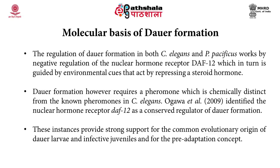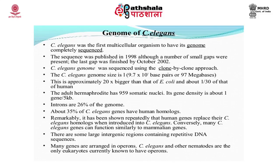The regulation of dauer formation includes negative regulation of the nuclear hormone receptor DAF-12, which in turn is guided by environmental cues that act by repressing a steroid hormone. C. elegans was the first multicellular organism to have its genome completely sequenced. The sequence was published in the year 1998 although a number of gaps were present. The last gap was finished by October 2002. The genome was sequenced using the clone by clone approach.